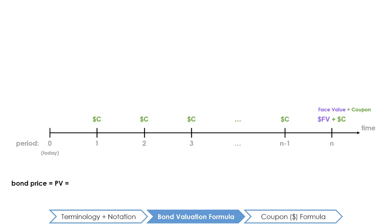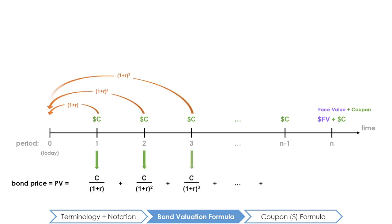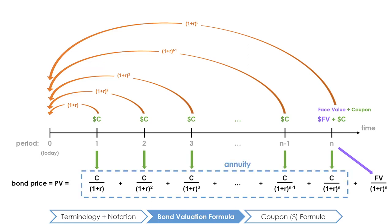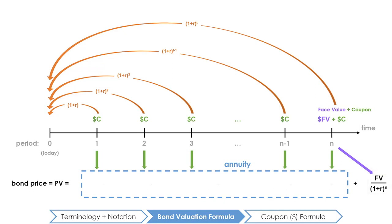The price of a bond can be found by moving each cash flow individually back to today. As we do so, you may notice that the cash flows of a bond look similar to that of an annuity — and you would be absolutely correct. The coupon payments of a bond are an annuity due to their fixed nature, but a bond has an added principal amount that must be paid on the maturity date, which annuities do not have. Thus, the formula to calculate the price of a bond borrows the annuity formula to calculate the present value of the coupon payments, plus a simple present value formula to discount the final principal payment.